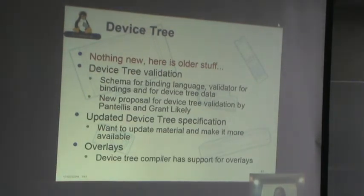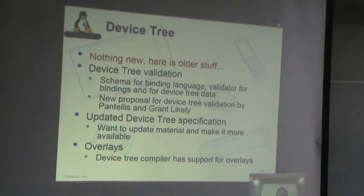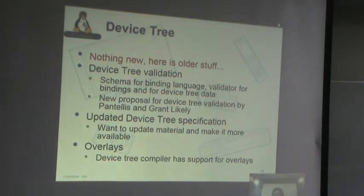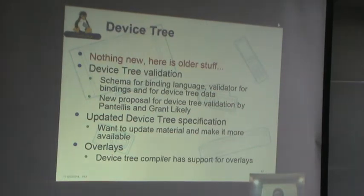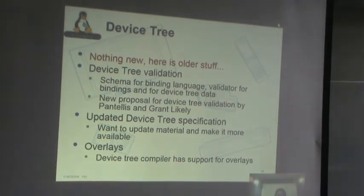Next up is device tree. There was a device tree birds-of-a-feather session at ELC, but there's not a lot of new stuff going on. They're still talking about device tree validation and the updated device tree specification, and neither seems to be making a lot of progress. What has made some progress is overlays — the device tree compiler added support for overlays. Overlays are used when you have a development board where you can put different daughter boards on, so you can have a base device tree blob and augment it with an overlay specific to a daughter board. Very handy for things like BeagleBone or Raspberry Pi.